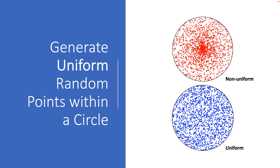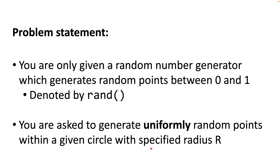Hello everyone. I would like to give you a micro tutorial on how to generate uniform random points within a circle. The problem statement is as follows: we are given only a random number generator which generates random points between 0 and 1, denoted as rand() within the context of this tutorial, and we are asked to generate uniformly random points within a given circle with a specific radius R.